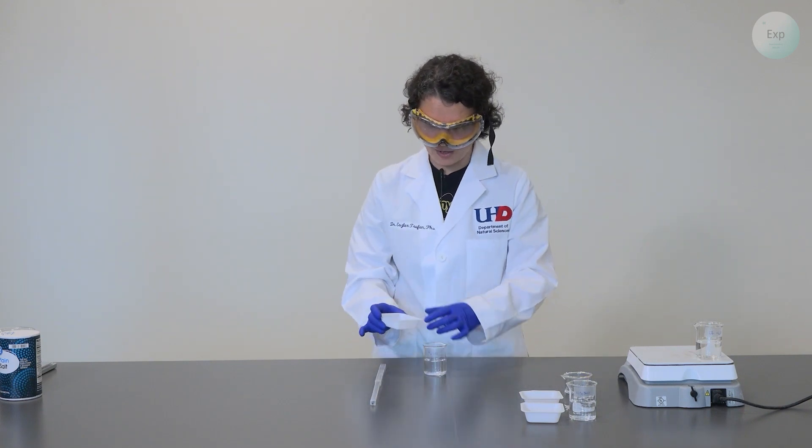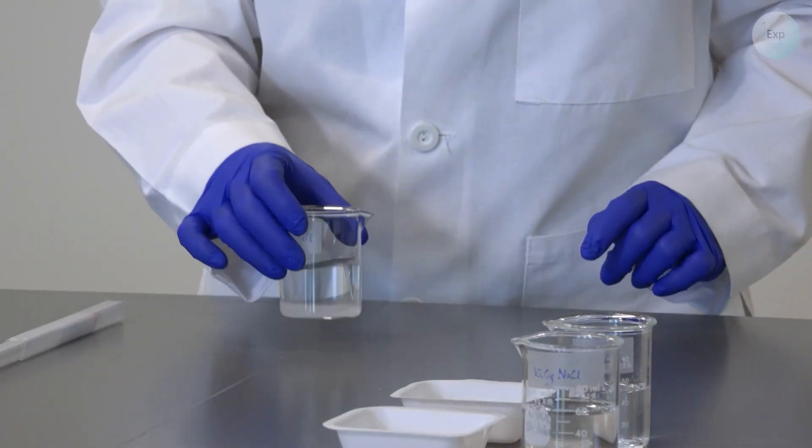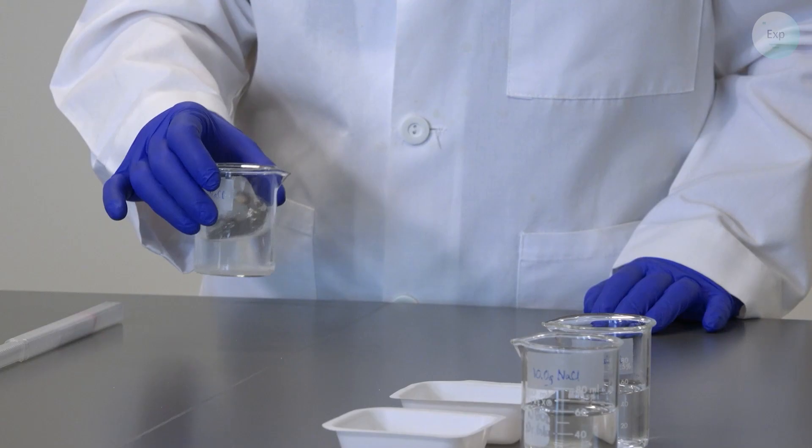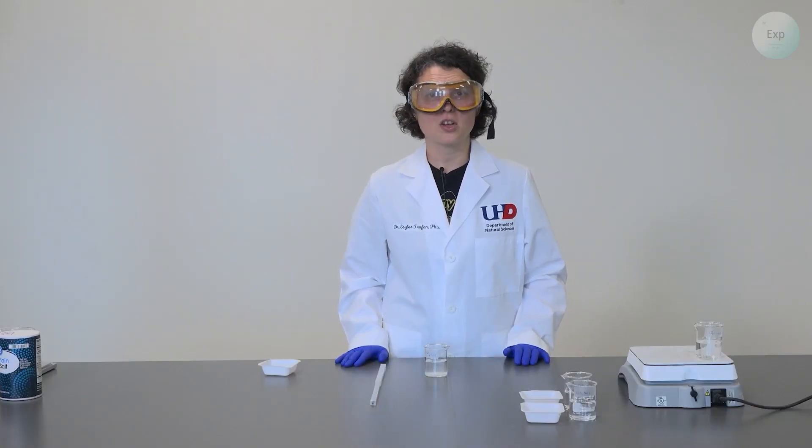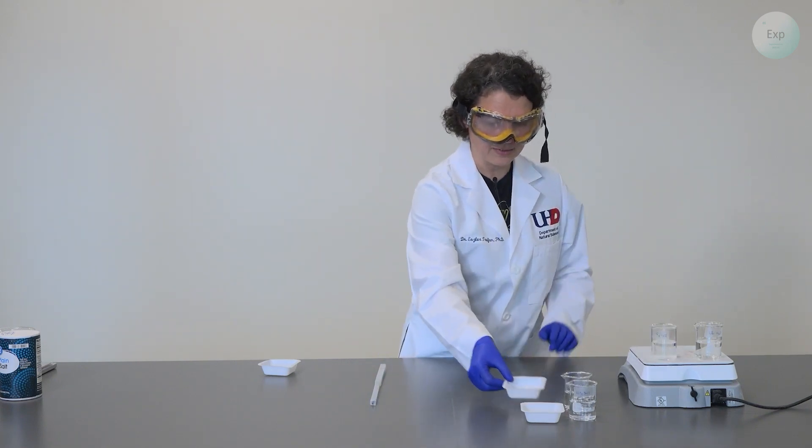Next, I will combine my 5 grams of sodium chloride with the water. I may swirl it a little bit. But typically, heating the water is going to help dissolve the sodium chloride faster. So I will place this also on the hot plate.